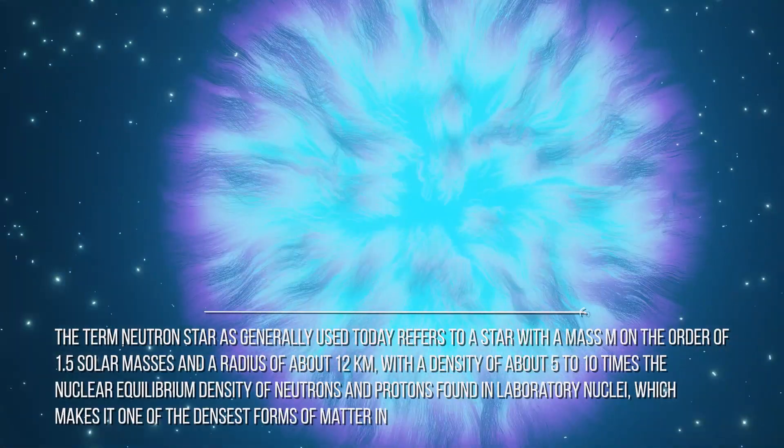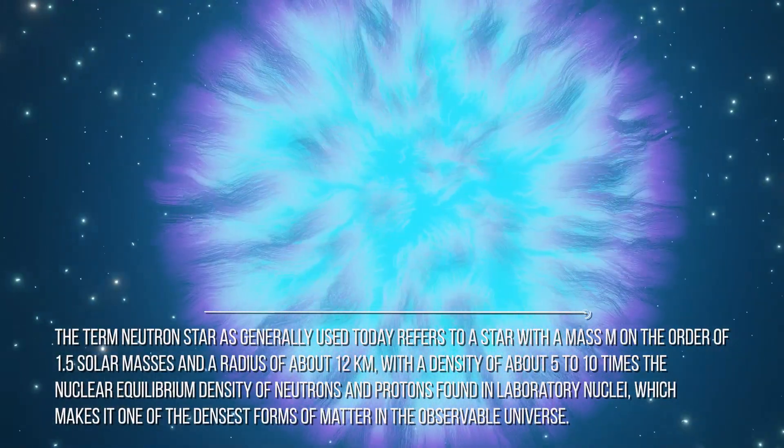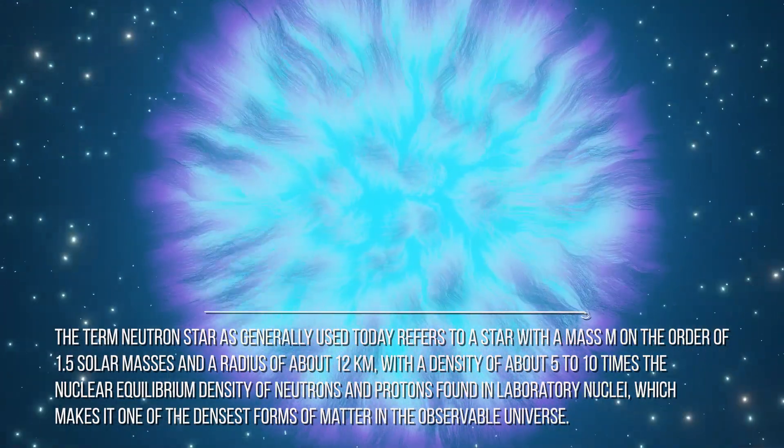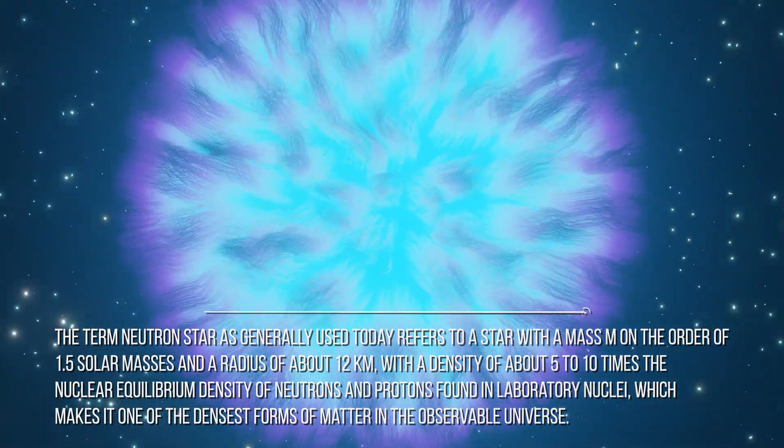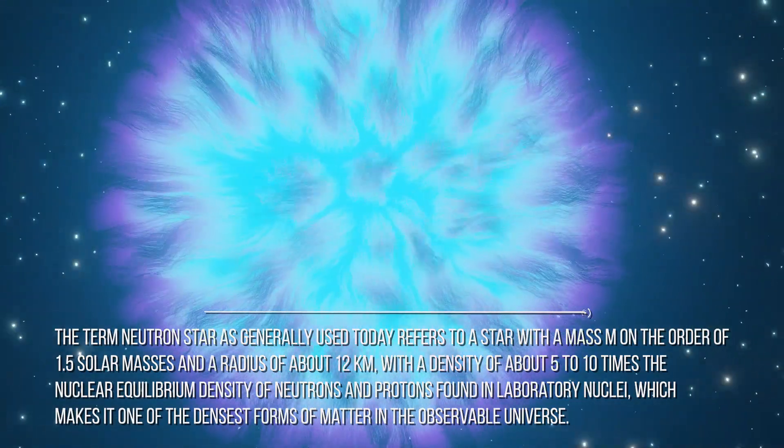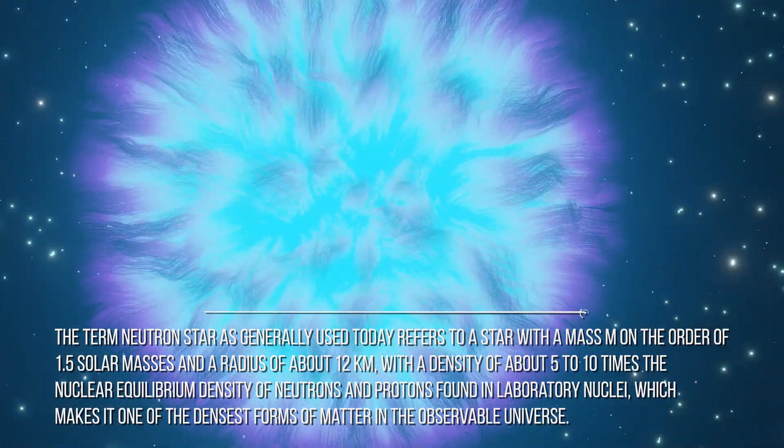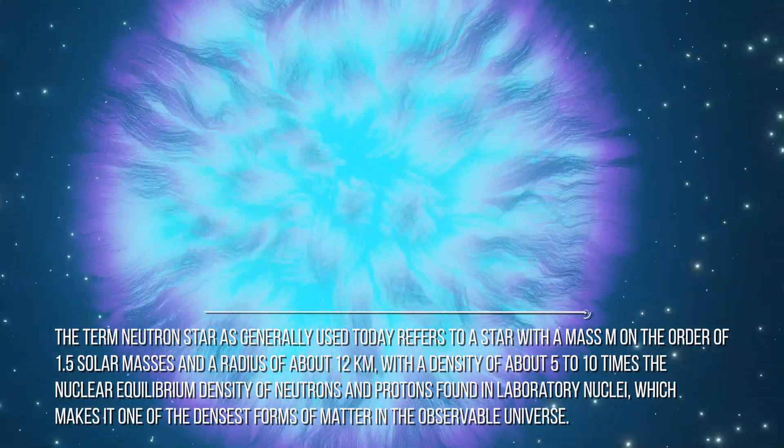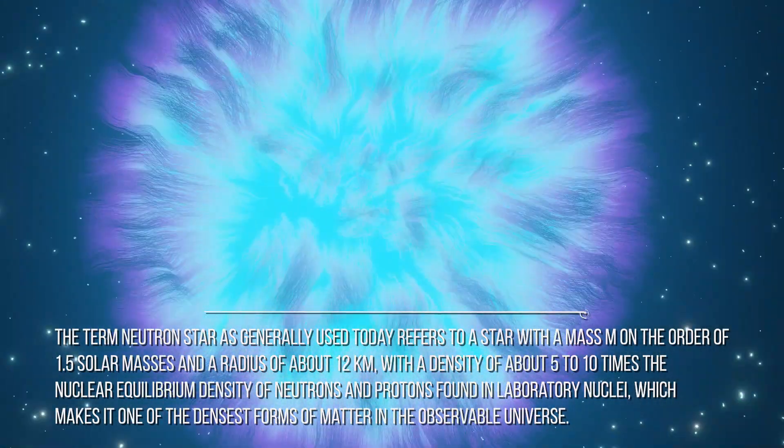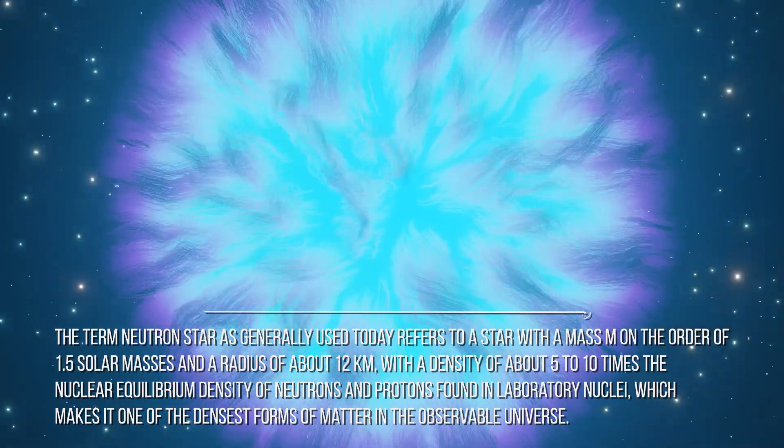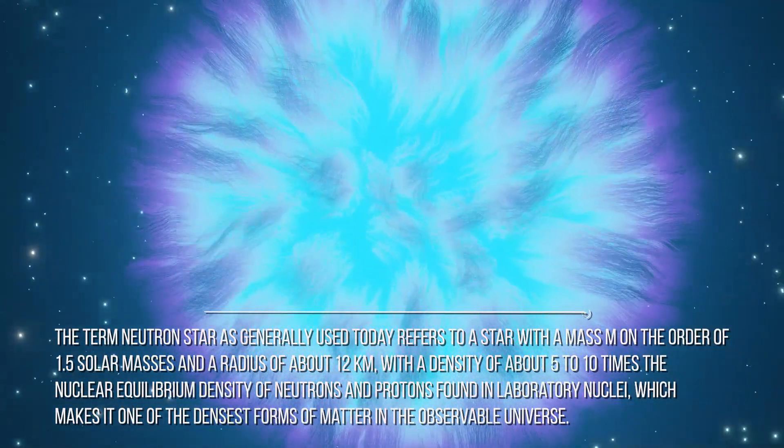The term neutron star, as generally used today, refers to a star with a mass on the order of 1.5 solar masses and a radius of about 12 kilometers, with a density of about 5 to 10 times the nuclear equilibrium density of neutrons and protons found in laboratory nuclei, which makes it one of the densest forms of matter in the observable universe.